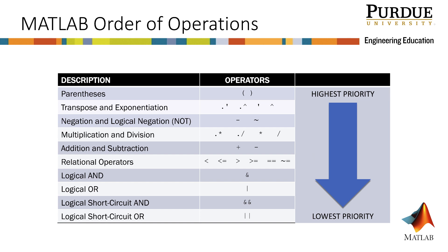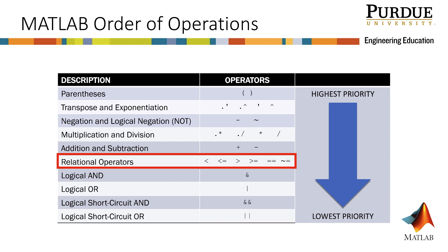Now that we know something about the relational operators, how do they fit within the other operations in MATLAB? All six relational operators are at the same priority level. They come after all algebraic operators, and the only logical operator that comes prior to relational operators is logical negation. All other logical operators come after relational operators.